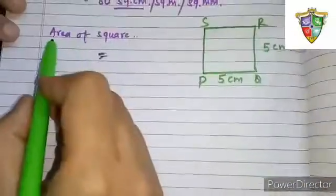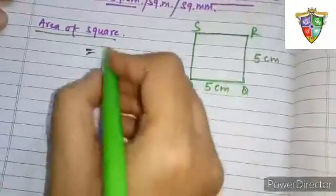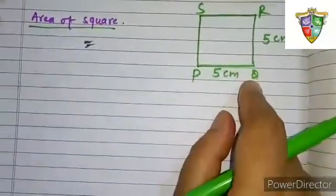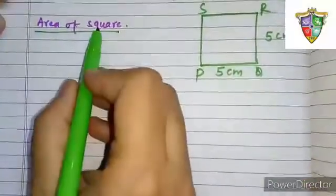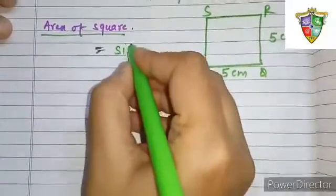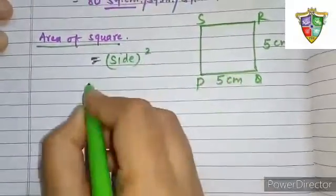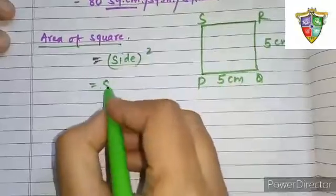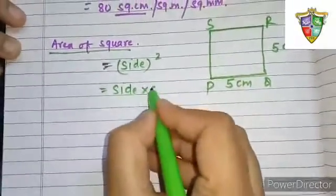If we talk about area of a square, that means we have to talk about sides. Area of a square is equal to side squared. What do you mean by side squared? That means side into side.